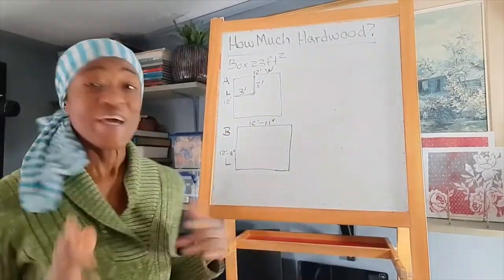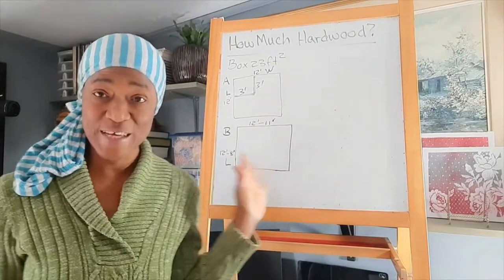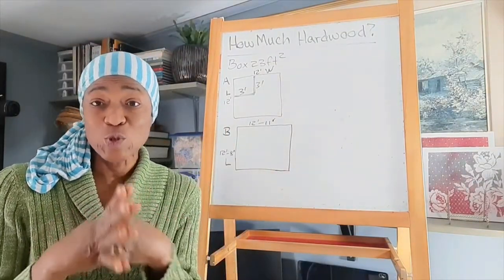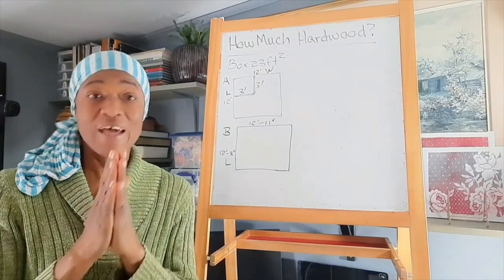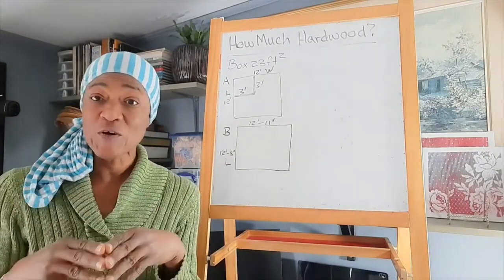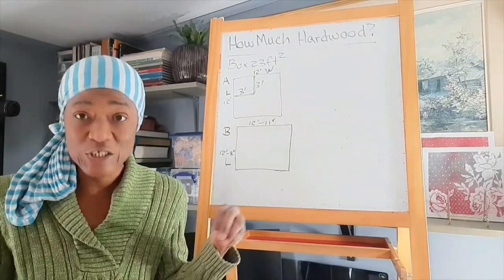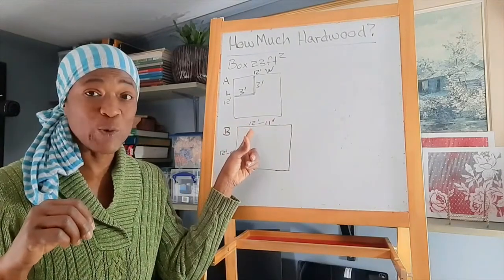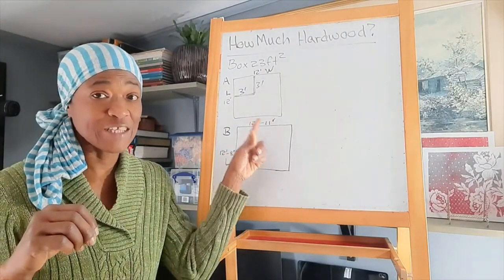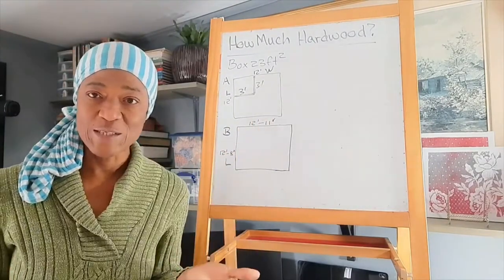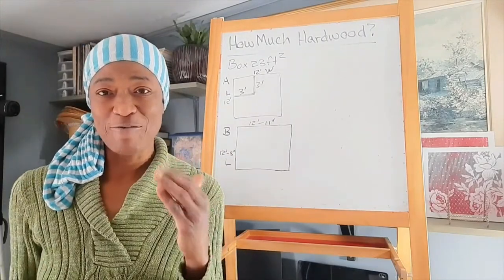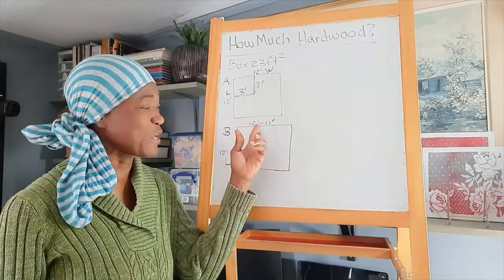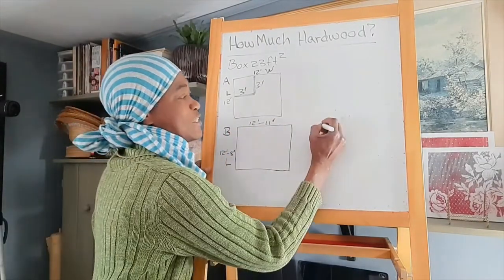So let me go ahead and erase this. Okay. So in a situation like this, where we have feet and inches, what we'll have to do, first of all, is convert everything into inches. Okay. So we'll have to take the 12 feet and convert that into inches. How many inches are in a foot? There are 12 inches in a foot. Therefore,